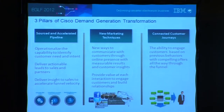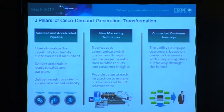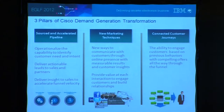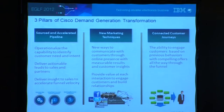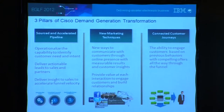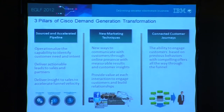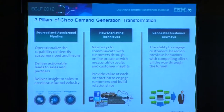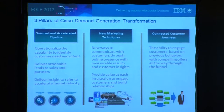Let's use the example of Cisco. Cisco is focused on transforming their demand generation activities. Cisco sells predominantly through business partners, but also through a direct sales force. What Cisco wants to do is deliver actionable leads to sales and partners — higher quality leads to their business partners and sales people. The way they're going to achieve that is through new marketing techniques where they provide value at every interaction to engage customers and build relationships, building intimacy by engaging customers based on previous behaviors with compelling offers all the way through the funnel.